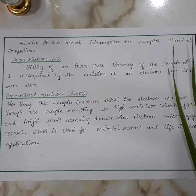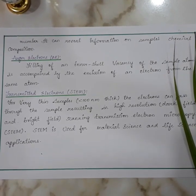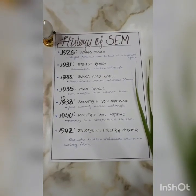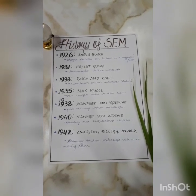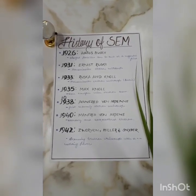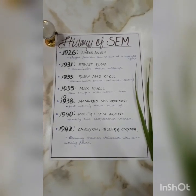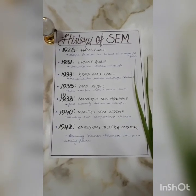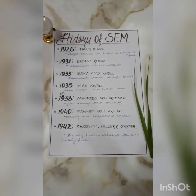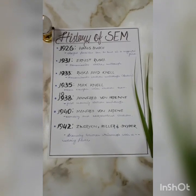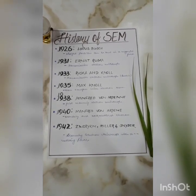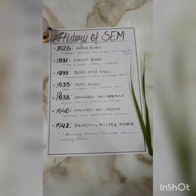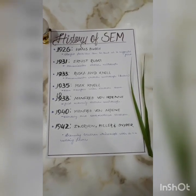This technique is known as Scanning Transmission Electron Microscopy (STEM). SEM is used for material science and life science applications. Regarding the history of SEM: in 1926, Hans Busch demonstrated that charged particles can be bent in a magnetic field as glass lenses bend visible light. In 1931, Ernst Ruska built the first transmission electron microscope with resolution higher than a light microscope. In 1933, Ruska and Knoll worked on their transmission electron microscope in Berlin.